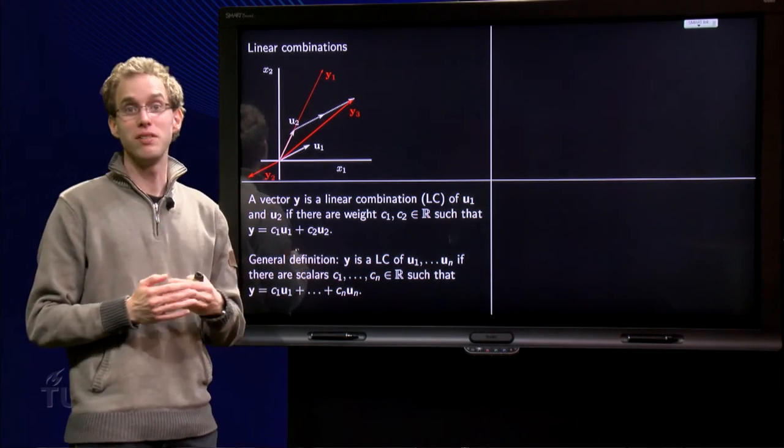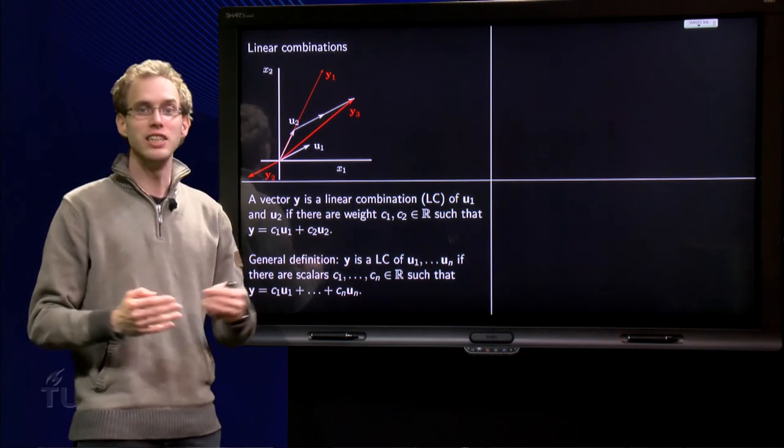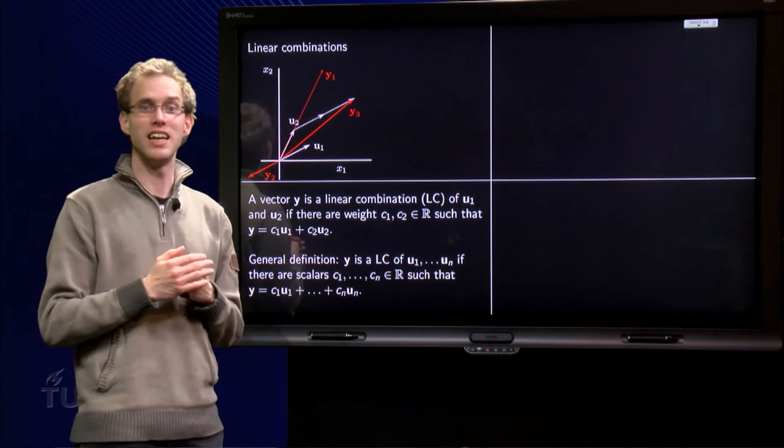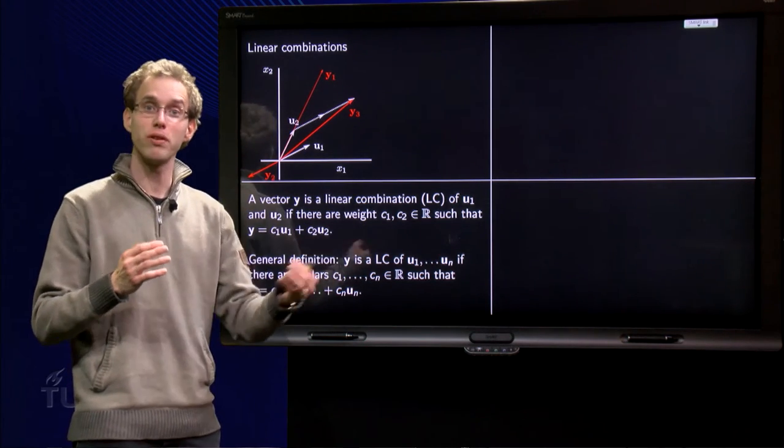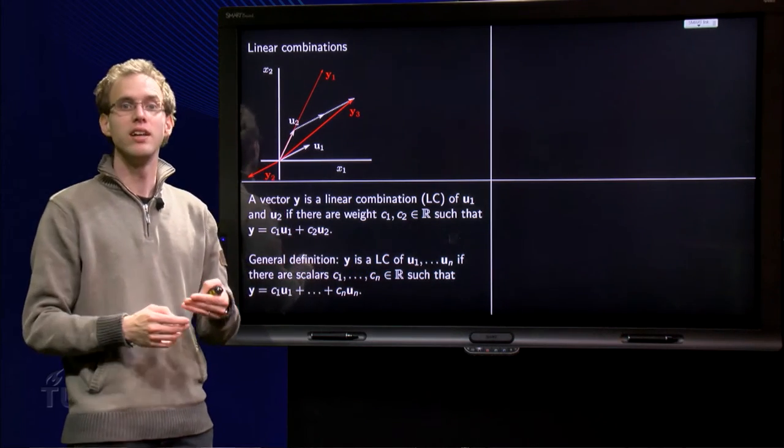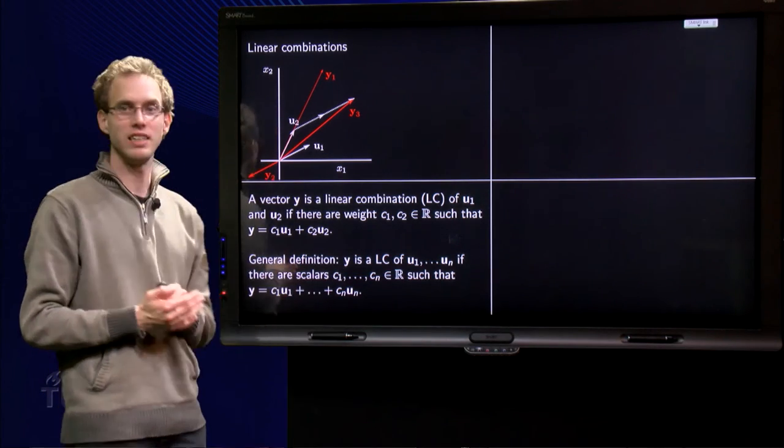So now we know what it means if a vector is a linear combination of two other vectors. This easily generalizes to n other vectors. A vector y is said to be a linear combination of n other vectors u1 to un if there are weights c1 to cn such that you can make y out of u1 up to un.